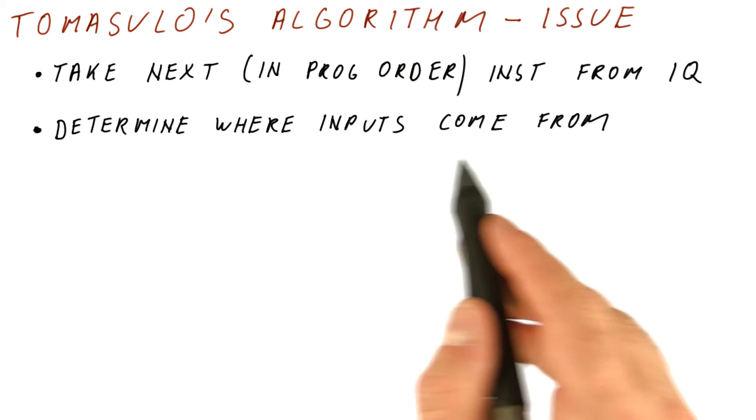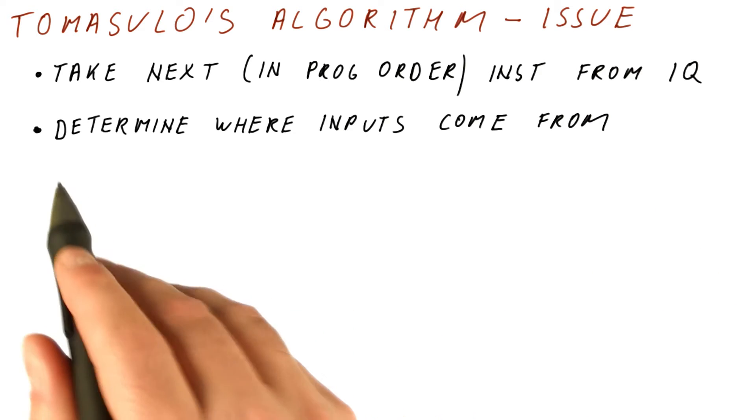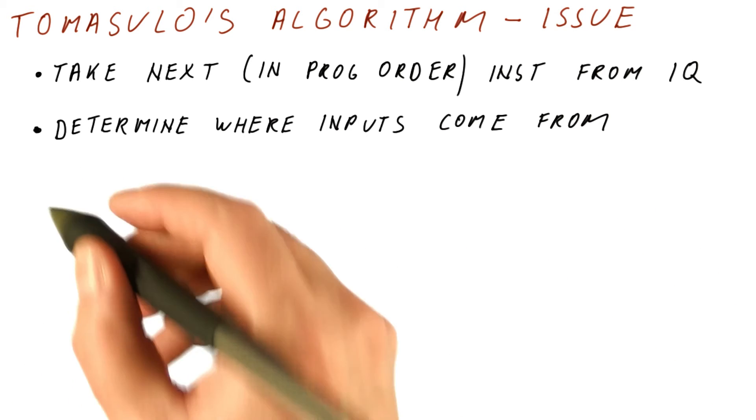We then need to determine where the inputs of the instructions are going to come from. Are they already in the register file, or are they going to be produced by some of the instructions that still hasn't broadcast its result? And if we need to wait for an instruction, which one? So there will be some sort of RAT table there.